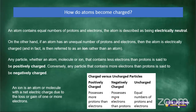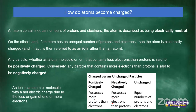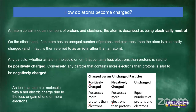More electrons means negatively charged — MEN. If an object possesses more protons, that means fewer electrons, so it is positively charged — PMP, more protons, positively charged. More protons automatically means fewer electrons.